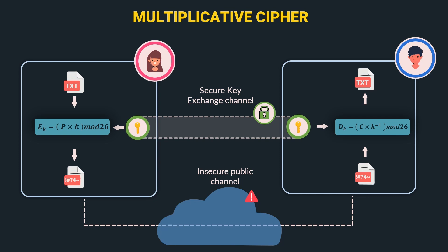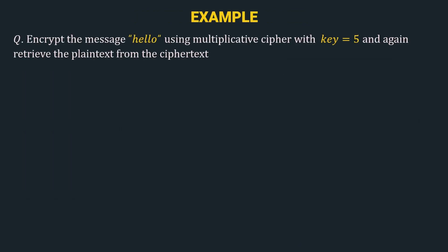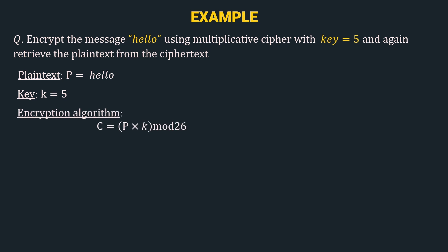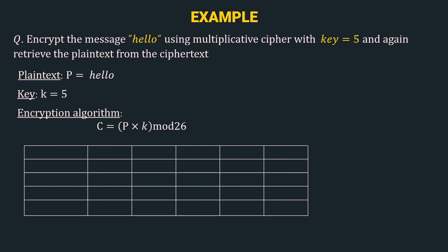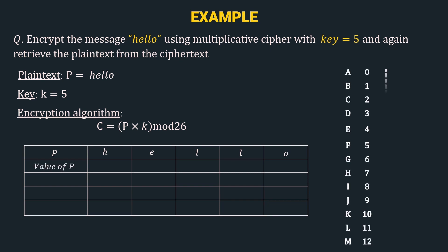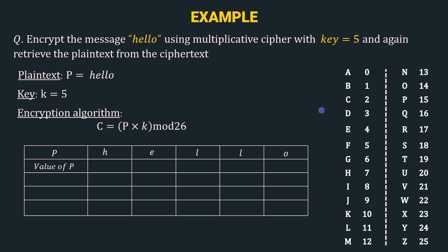Let's solve an example. Encrypt the message 'hello' using the multiplicative cipher with key k = 5, and then retrieve the plain text from the ciphertext. The encryption algorithm is c = p × k mod 26. We construct a table: the first row is p, the individual alphabets. Their numerical values are: h = 7, e = 4, l = 11, l = 11, and o = 14.